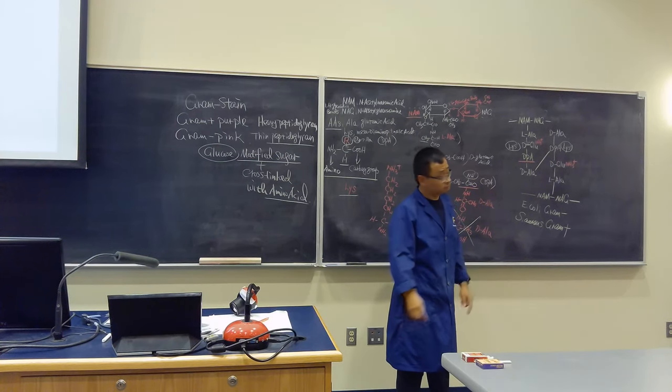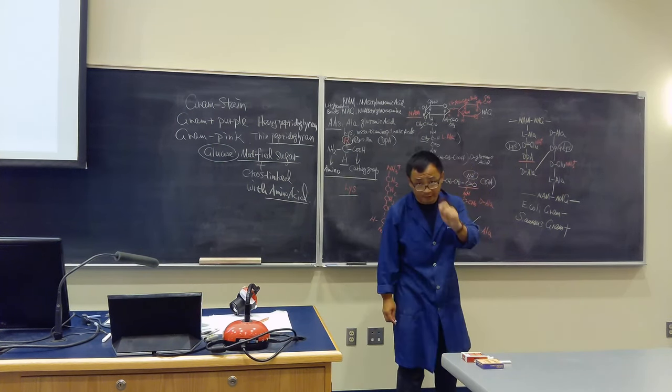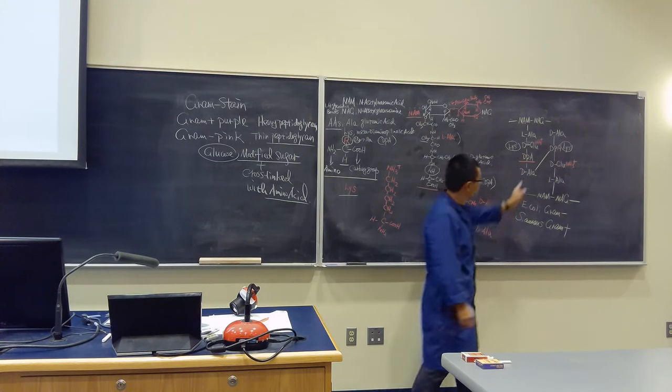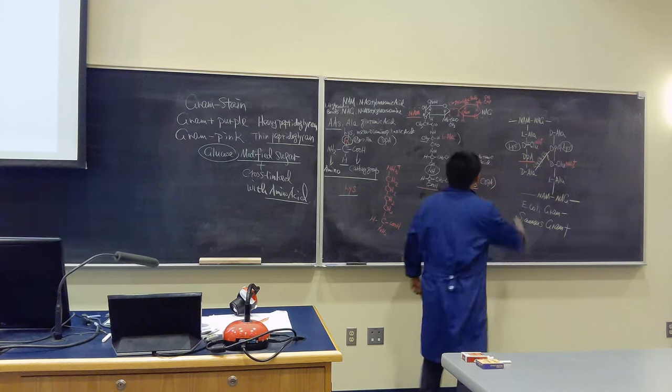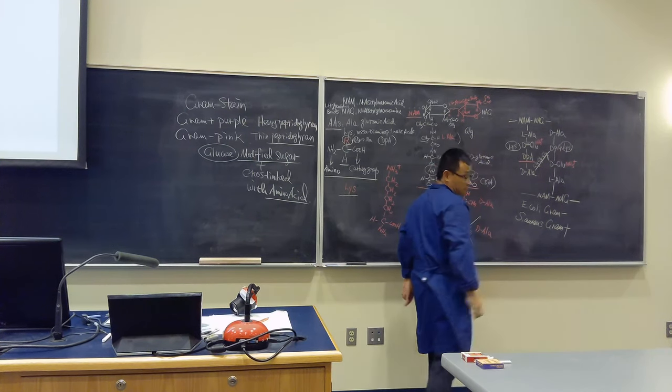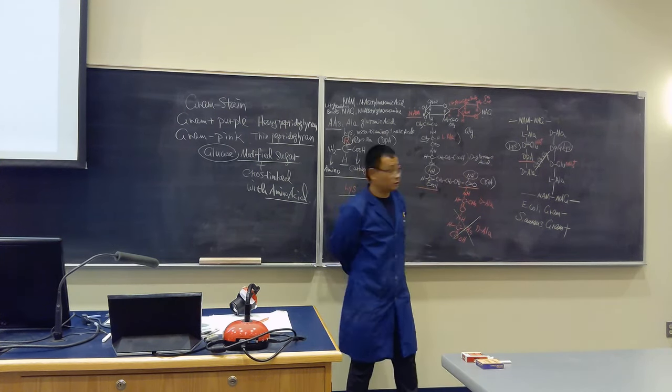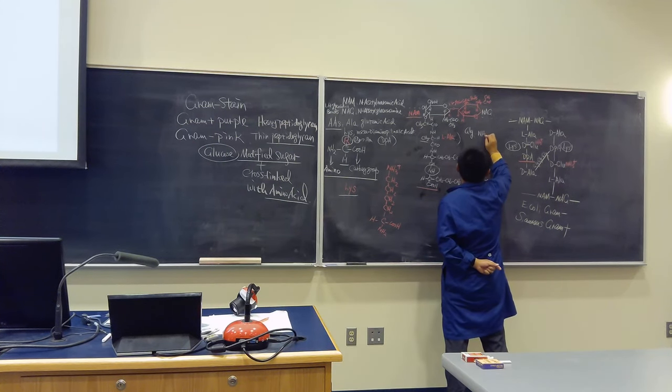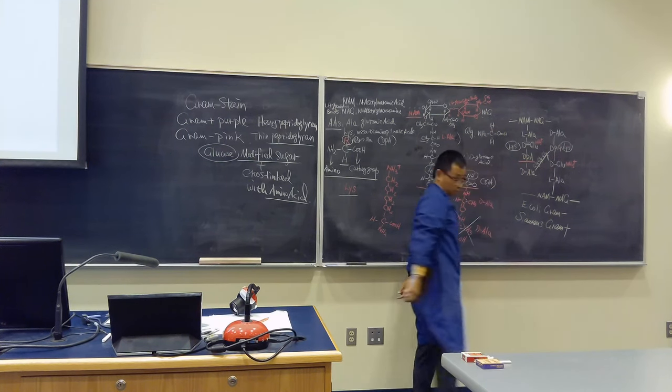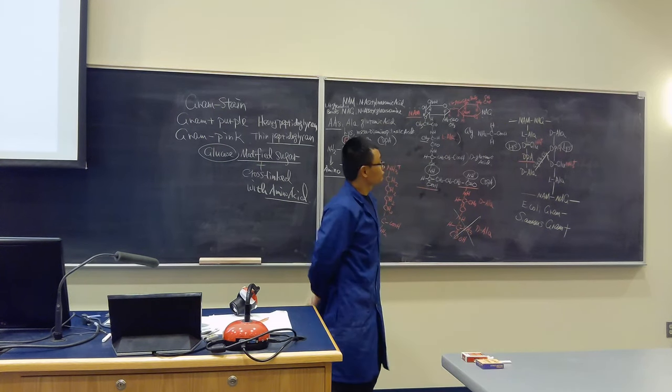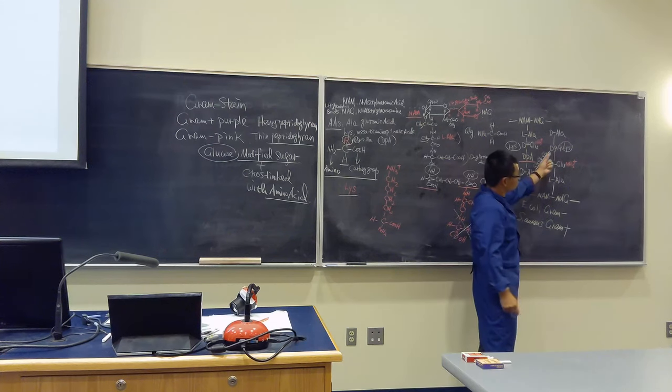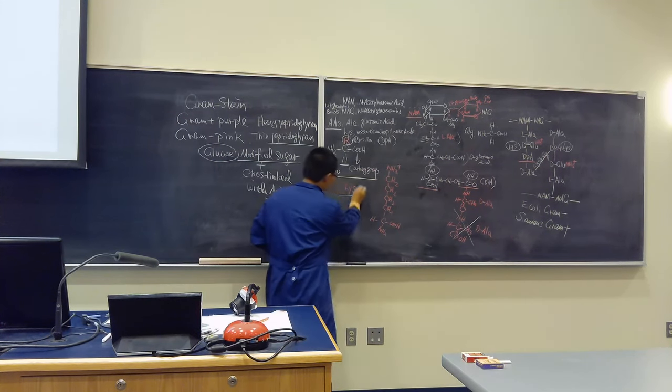Again, another thing. We know for gram-positive bacteria, peptidoglycan is thick. Another reason? The cross-link here is linked with glycine. What's the structure of glycine? You should all know. It's the first one: C, COOH, H, and H. It's a non-chiral amino acid - there is no D or L. That's the difference.